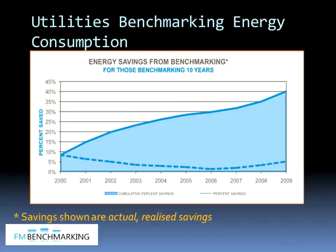This next chart from one of our benchmarking groups shows first-year energy savings of roughly 8%. The chart declines a little after years three and four — they've picked off the low-hanging fruit. But in the sixth and seventh year, energy prices went up and they found more things to implement. Through benchmarking, the group was able to identify what to do and achieve cost savings. In no year over these ten years was the cost of benchmarking greater than the savings achieved.